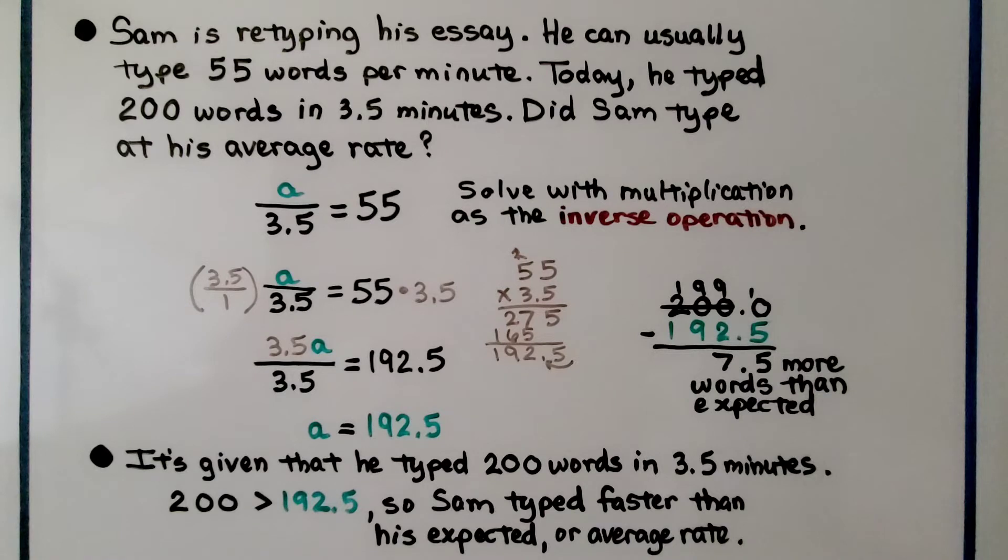Sam is retyping his essay. He can usually type 55 words per minute. Today he typed 200 words in 3.5 minutes. Did Sam type at his average rate?